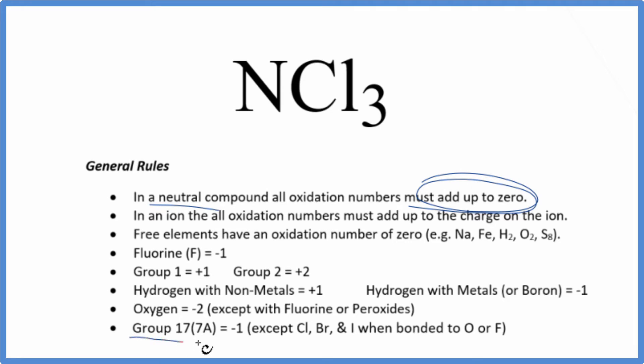Chlorine, though, that's in group 17, sometimes called 7A. It's going to be minus 1, with a few exceptions. So we know that each chlorine is going to have a minus 1 oxidation number.